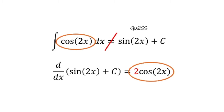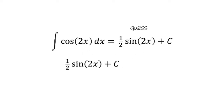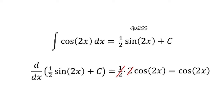However, our guess was not too far off. We can correct for the extra factor of 2 by changing our initial guess. Let's try multiplying by ½ sin(2x). If we check by computing the derivative, using the chain rule we get the derivative of ½ sin(2x) + c is ½ times 2 times cos(2x). And ½ times 2 equals 1, so we can cancel these terms, giving us cos(2x). This matches the function we're integrating, so ½ sin(2x) + c is the general antiderivative of cos(2x).